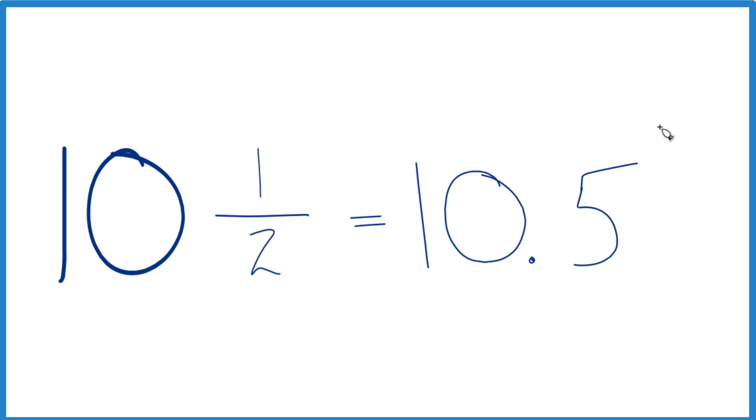The fraction 10 and 1 half equals the decimal 10.5. But if you didn't know that 1 half was equal to 0.5, you could figure it out.